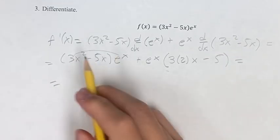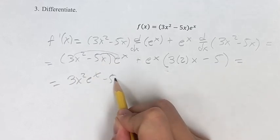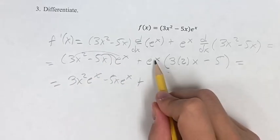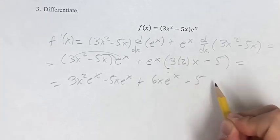So simplifying this out, we get 3x²e^x - 5xe^x + 6xe^x - 5e^x.